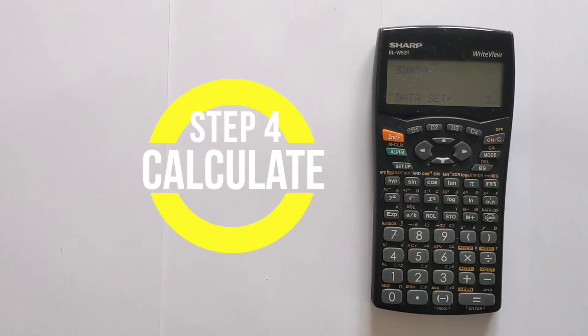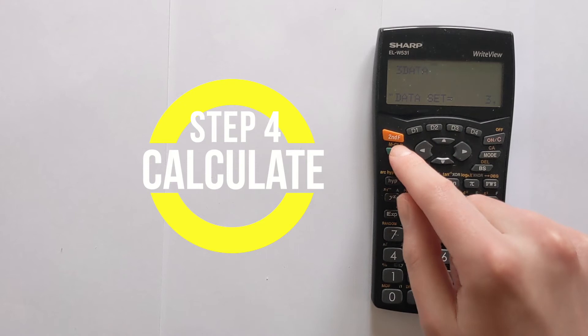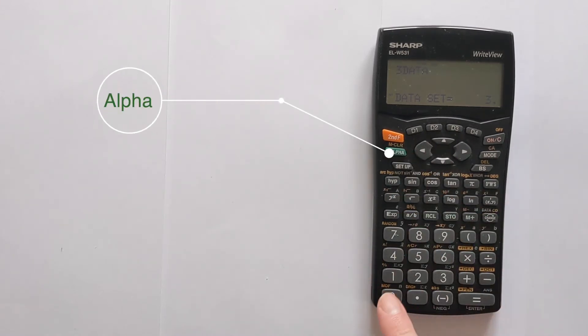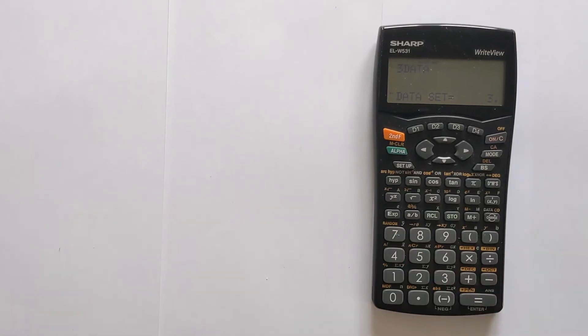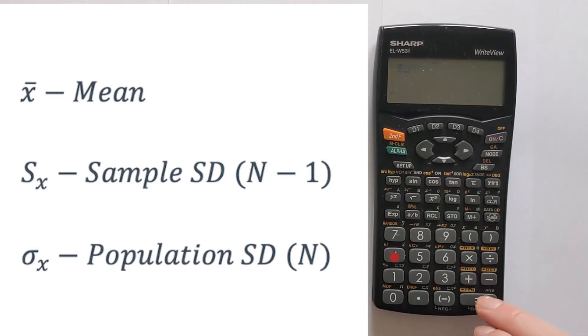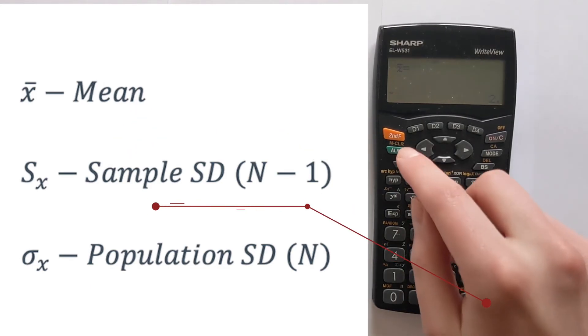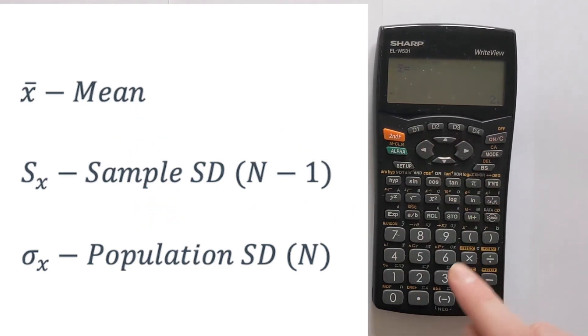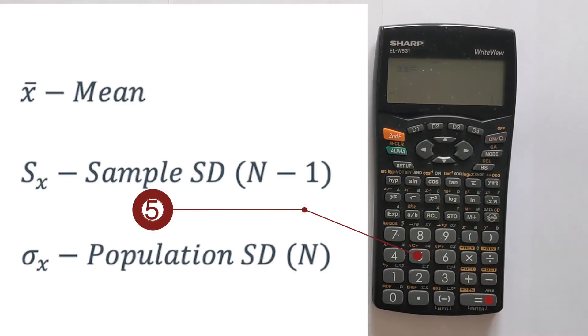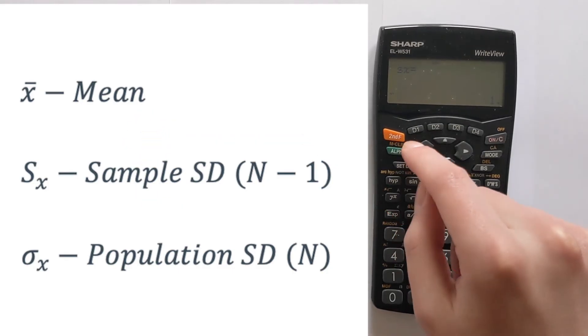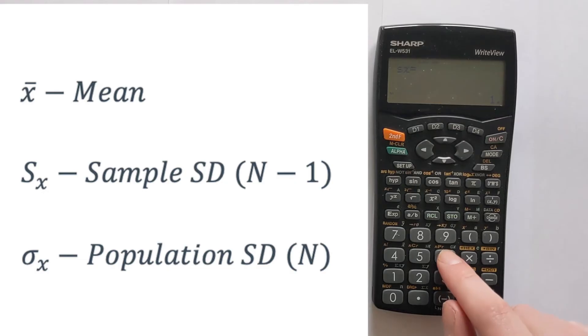The next step is to use the alpha button. So we press alpha and then on the keypad here with the numbers you've got all your different statistics functions. For example, if we wanted to find mean, we'd do 4 equals. If we wanted to find the sample standard deviation, we would do 5 equals. And if we wanted to find the population standard deviation, we'd do 6 equals. That is how you can get your standard deviations.